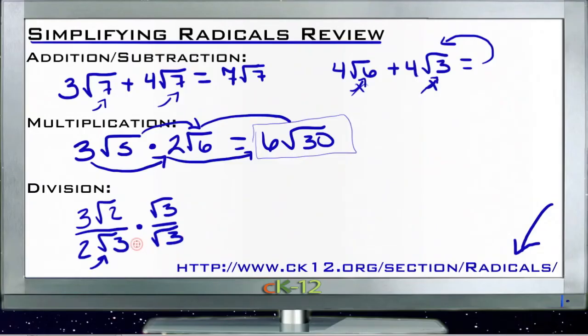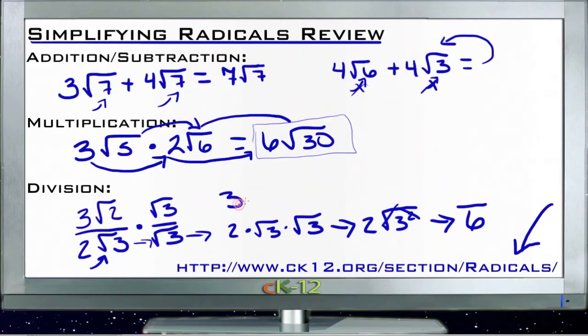If I have two roots of three times root of three on the bottom, that's the same as two times root three times root three, which is two times the root of three squared. A square root and a square are opposite, so they cancel each other out, and I end up with just six on the bottom.